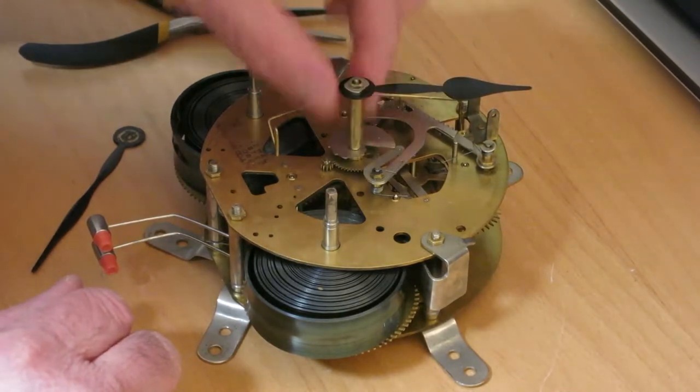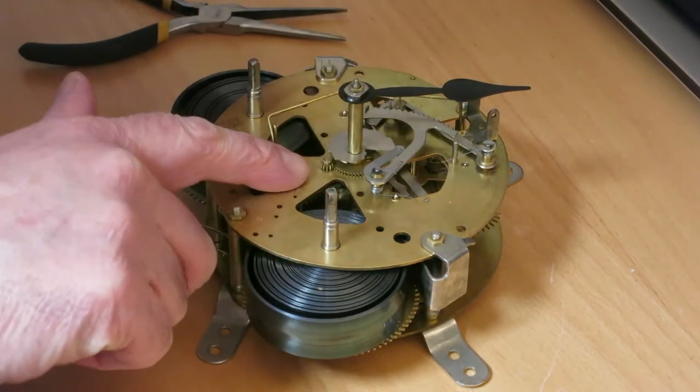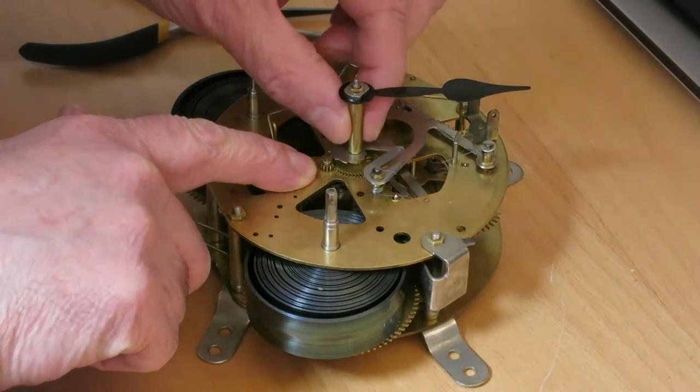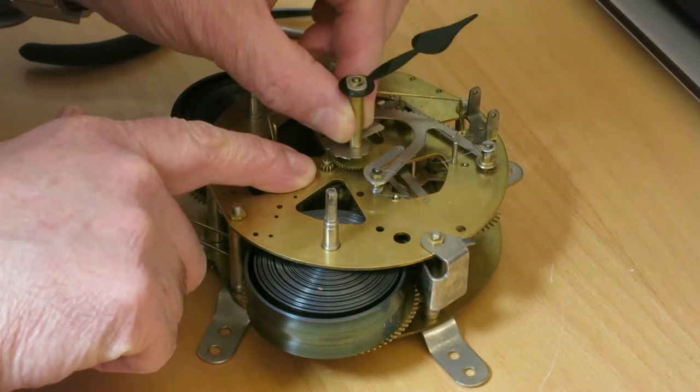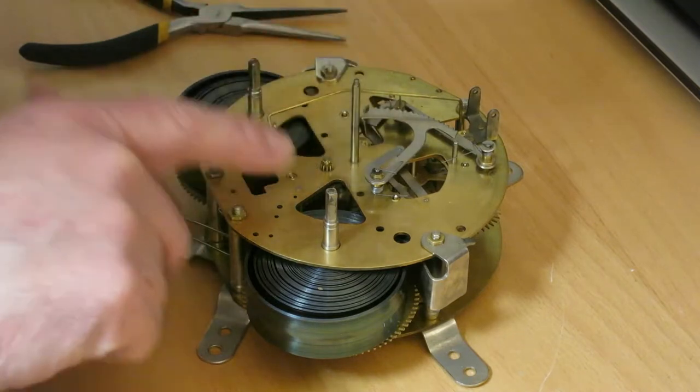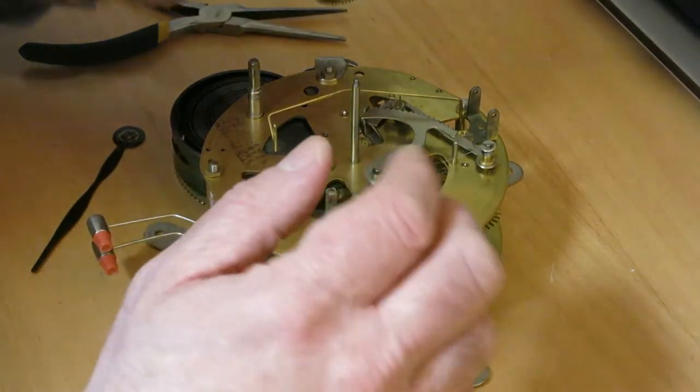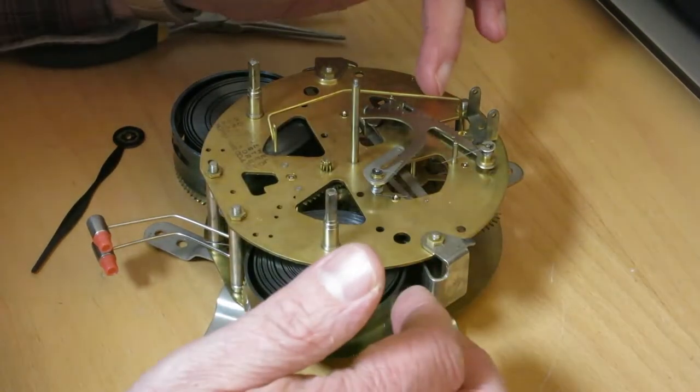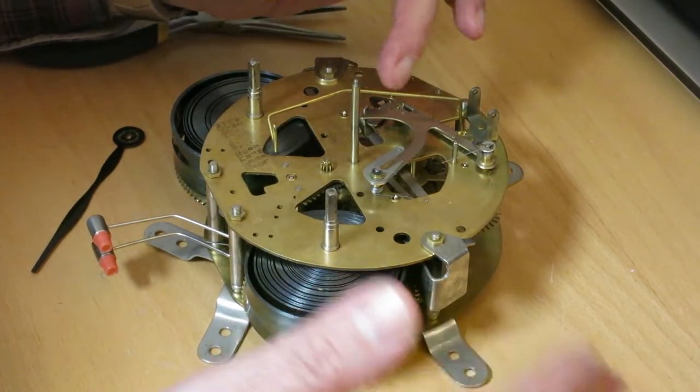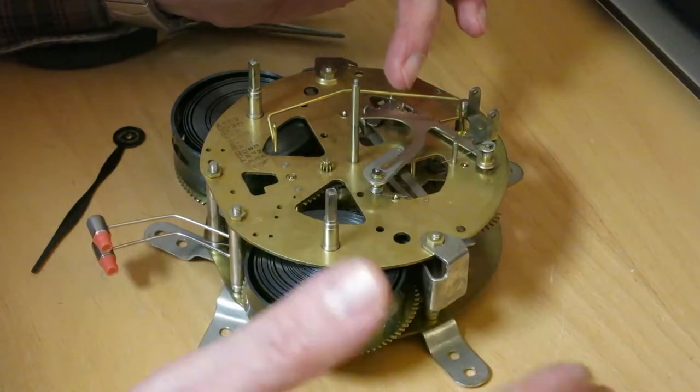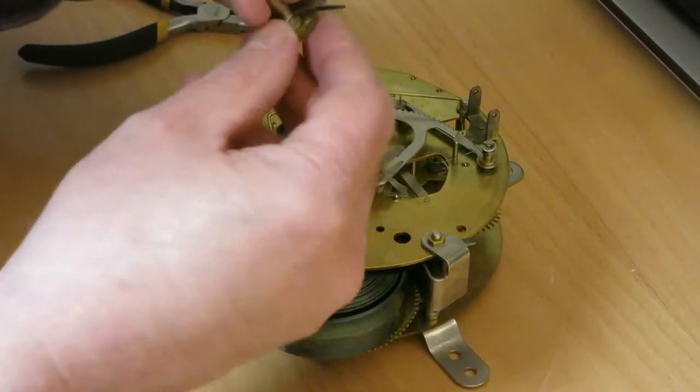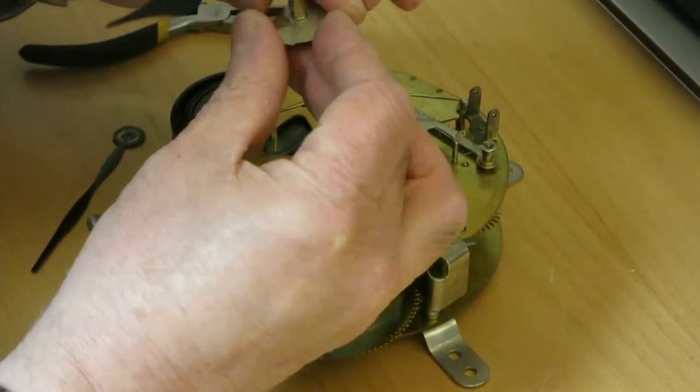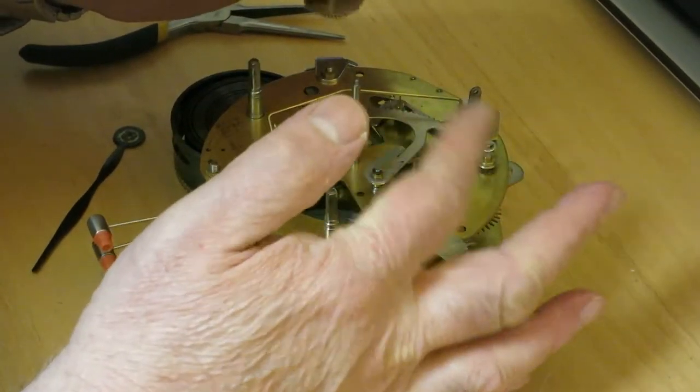The hour hand gears into this part of the motion gears here. It's really easy to get it one tooth off of where it belongs. If you do get it one or two teeth off, what will happen is the clock will strike incorrectly sometimes because this snail won't be exactly aligned with the rack that falls down into it.